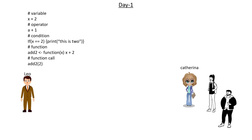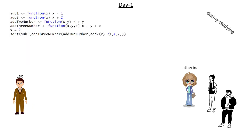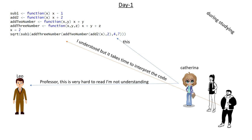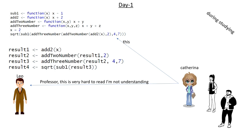While studying, Leo uses a complex nested expression. Katerina says, 'Professor, this is very hard to read, I am not understanding it,' and another student says, 'I understood but it takes time to interpret the code.' The rest of the students are not happy seeing this type of expression because it is so complex and hard to read. So the professor rewrites the expression in a clearer form and now students are able to understand.